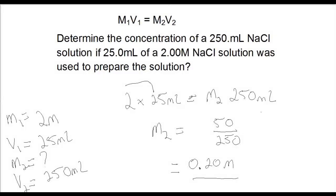I want to point out that the volume in the M1V1 = M2V2 equation doesn't need to be in liters. What does need to happen is that the volumes must be in the same units on both sides. It could be milliliters, liters, or microliters — but it's very important that the volumes are the same units on both sides.